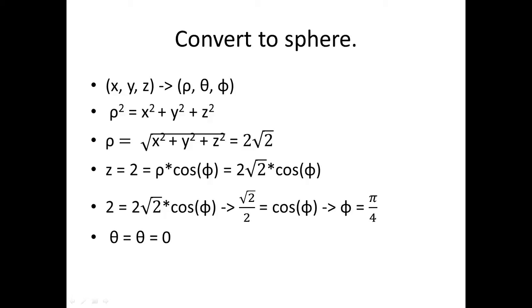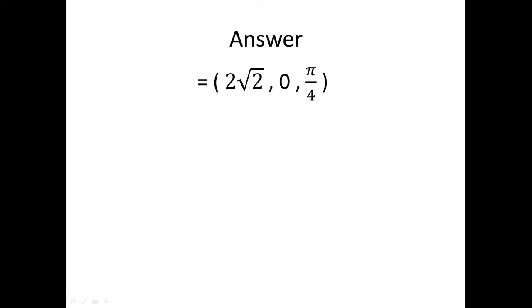The neat thing about converting from cylindrical to spherical coordinates is that you can take theta from your cylindrical coordinates and it will equal your theta in your spherical coordinates. So with those three equations, we have our final answer: rho is 2 root 2, theta is still 0, and phi is pi over 4.